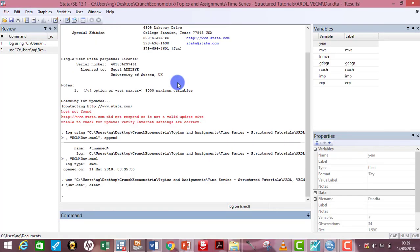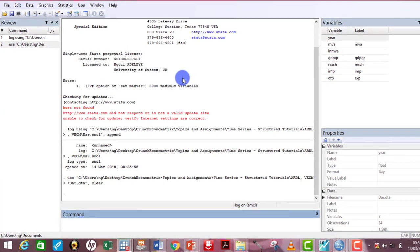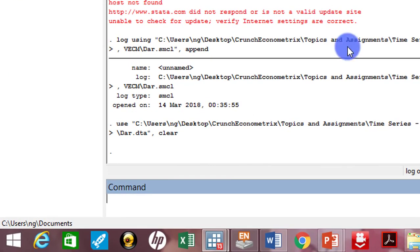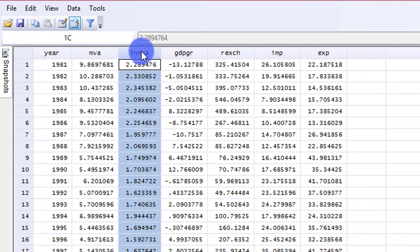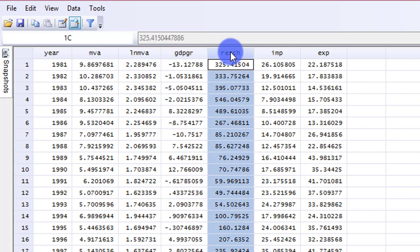Stata is already launched. I have my log files and my do files already. And if I type browse in the command section, it shows you what variables I have for this tutorial. I'll be using just three variables: the log of manufacturing value added, GDP growth rates, and real exchange rates. We want to know if there is a long-run relationship among these variables.